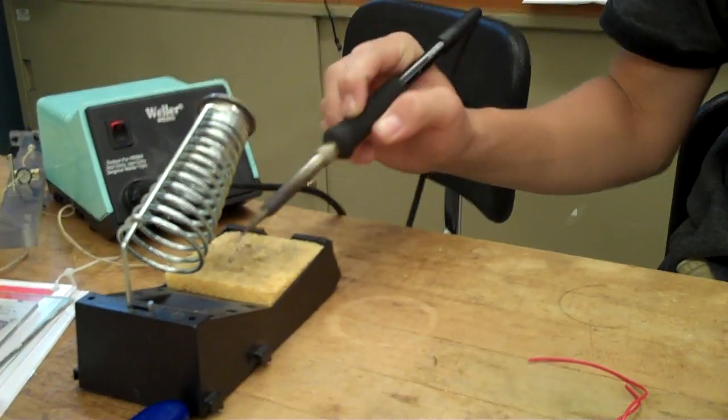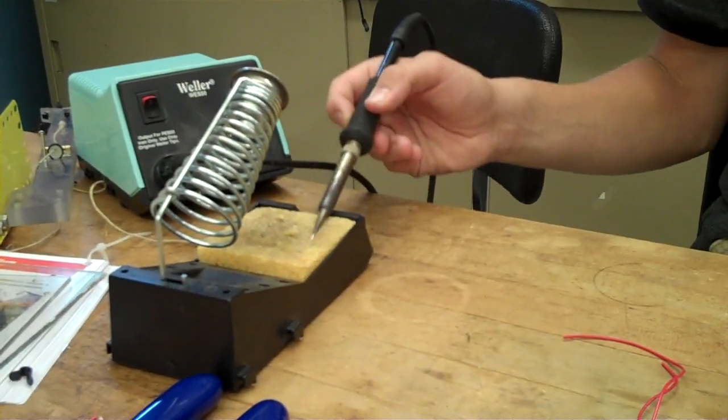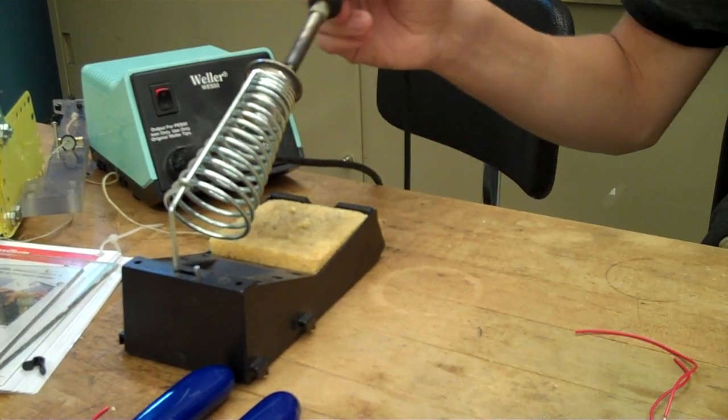Your soldering iron should already be on, and you should have a wet sponge, not dripping wet but just moist, so that you can wipe your solder off once you're done.